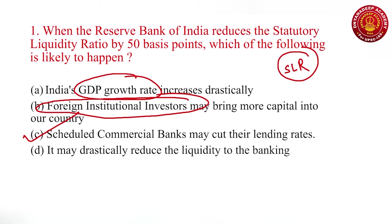What is the meaning of SLR? The statutory liquidity ratio means every bank has to maintain a certain amount of net demand and time liabilities — whatever deposits are in the bank — in the form of liquid assets with themselves. Every bank must maintain certain deposits in the form of liquid assets like gold, special drawing rights, certain cash, government securities, and government bonds.